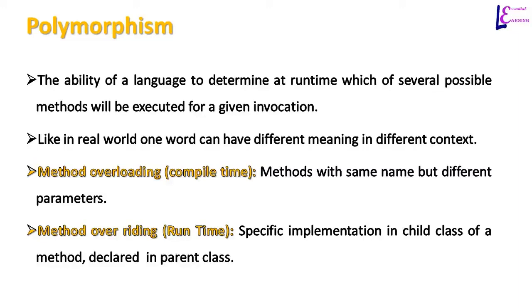There are two ways polymorphism is implemented: method overloading and method overriding. In method overloading, methods have the same name but different parameters, and they are differentiated from one another when the program is compiled. Method overriding happens at runtime.